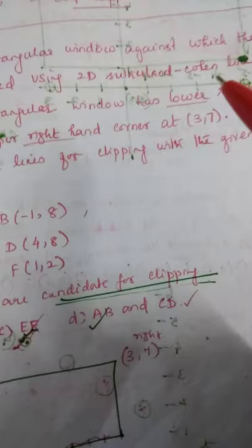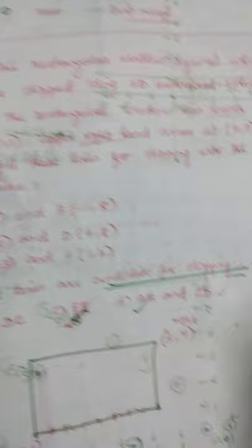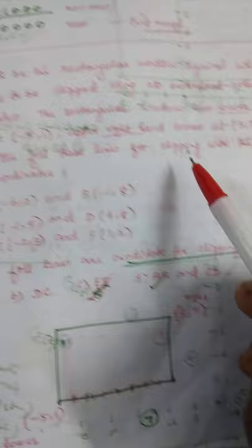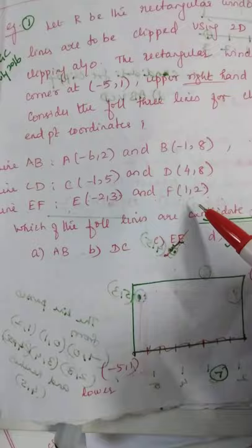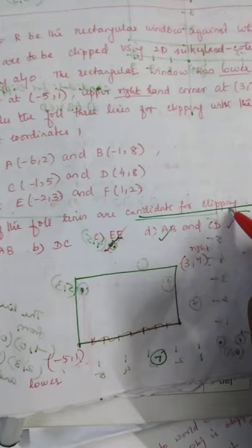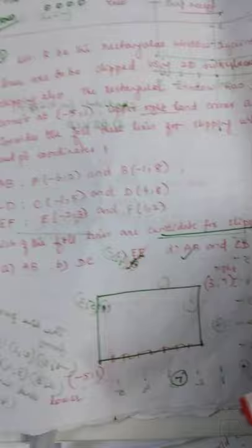Let us see an example. Let R be a rectangular window against which lines are clipped using the 2D Cohen-Sutherland line clipping algorithm. The rectangular window has its lower left corner at (-5, 1) and upper right corner at (3, 7). Consider three lines for clipping with given end point coordinates. The question asks: which of the following lines are candidates for clipping?